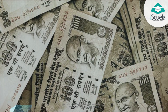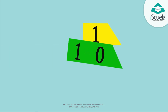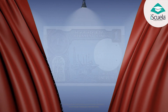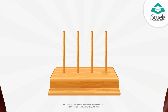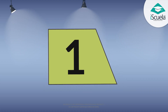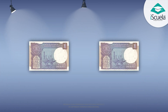Come on children, let's do the counting up to 1000 using currency notes, abacus, and value cards. What is the value of this currency note? Its value is rupee one. Good. Now tell how many beads are there in the stick of ones? One bead. Okay. Now tell me what is written on this card? One.